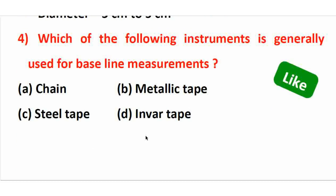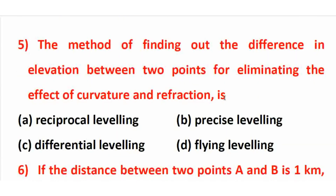Which of the following instruments is generally used for baseline measurement? The right answer is option D — invar tape. Invar tape is used for high accuracy baseline measurement. The tape material is steel 64% and nickel 36%. In a survey, the baseline is the main and longest survey line. You can fix the direction of the baseline measurement using invar tape for highly accurate measurement.